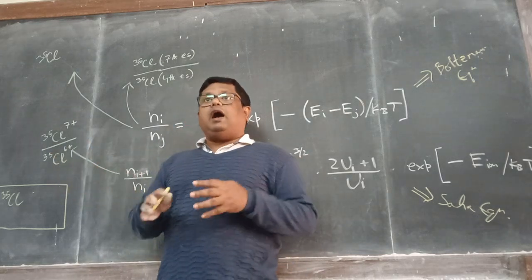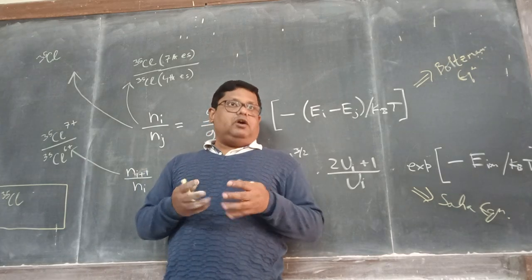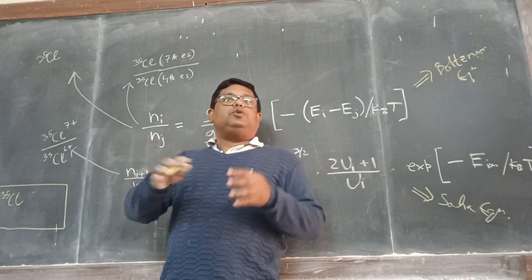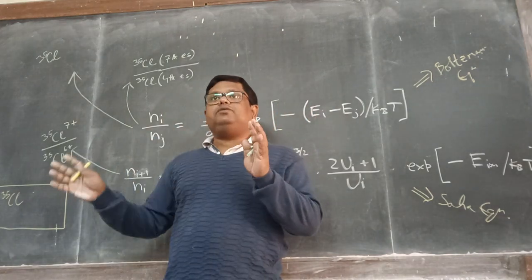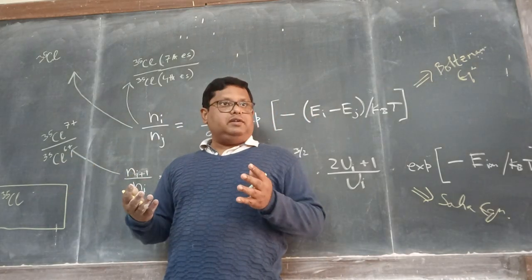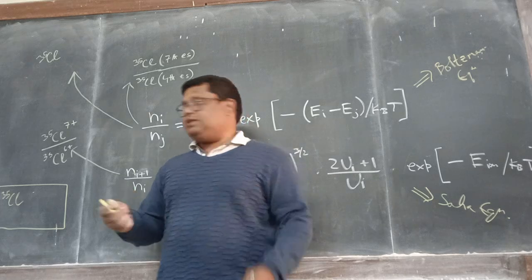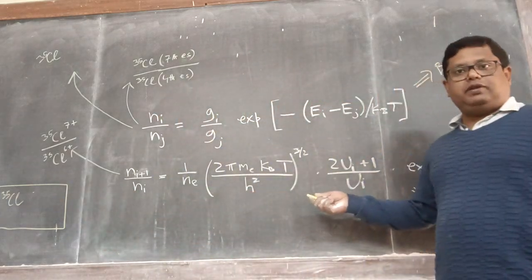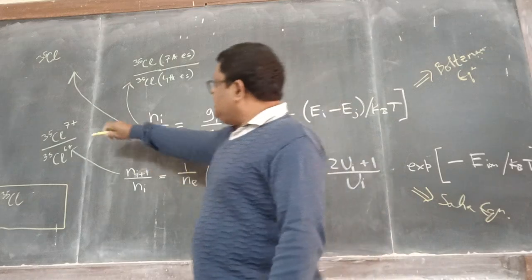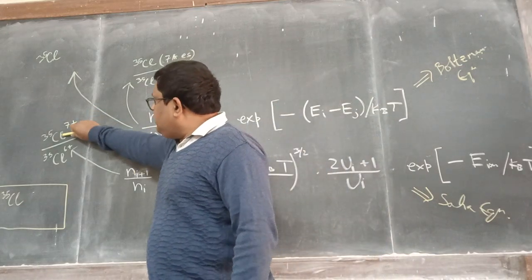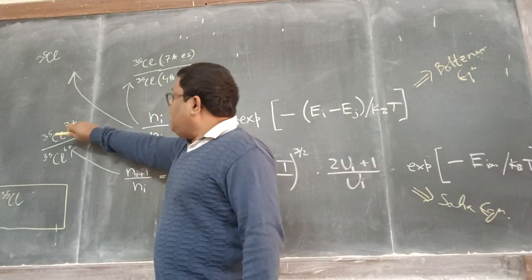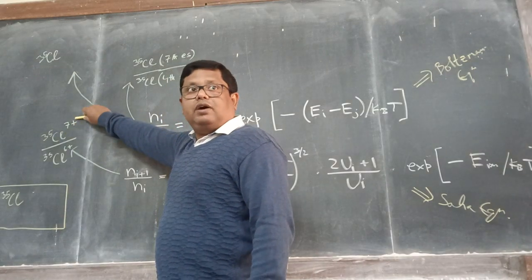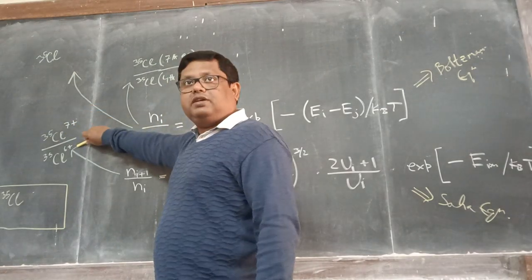The question is: how do we calculate or estimate that at a certain temperature, so many ions exist compared to atoms? Here the Saha equation comes into play. The Saha equation can tell me how many chlorine-35 ions in the 7+ state are there compared to the 6+ state.